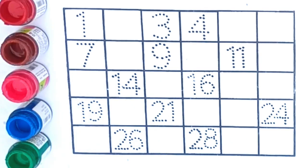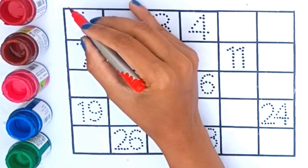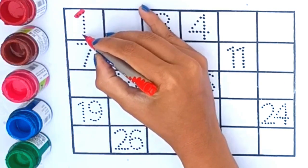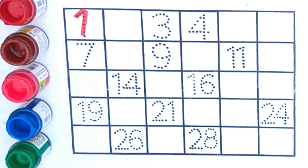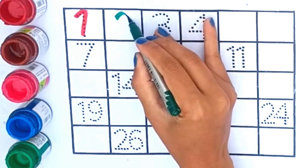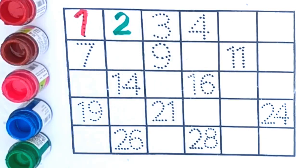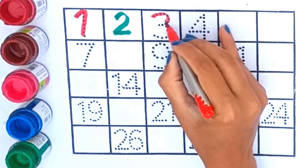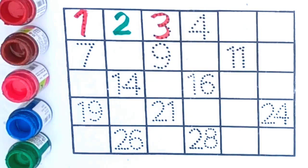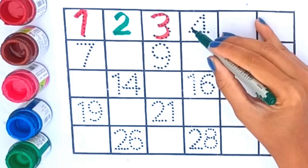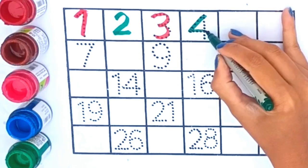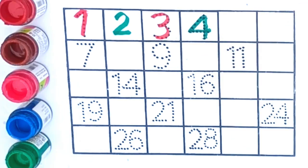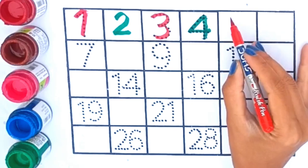1, yeh hai bacchho 1. Now this is 2. Yeh hai 3. 4. 5.